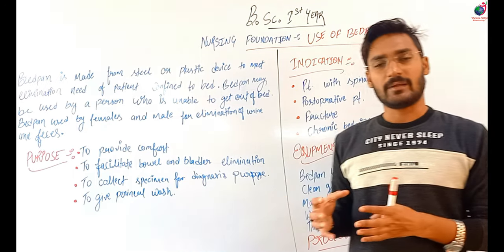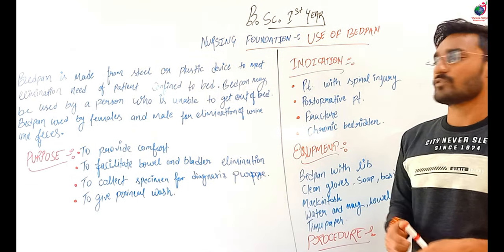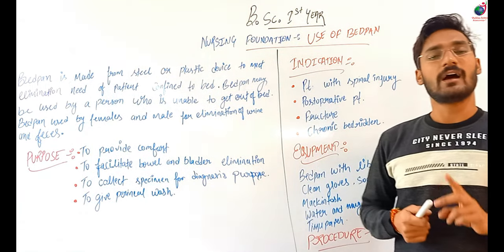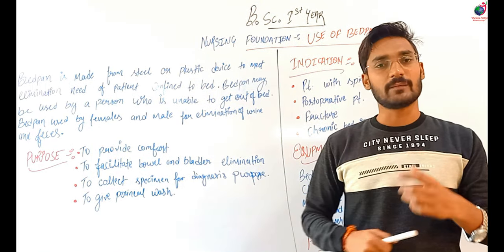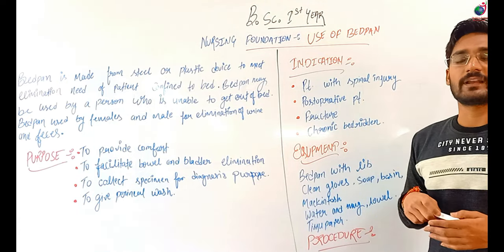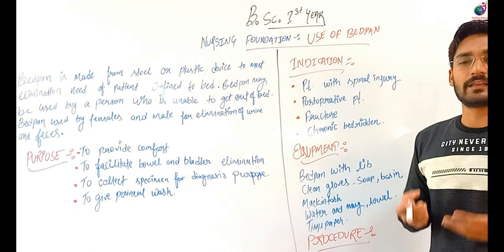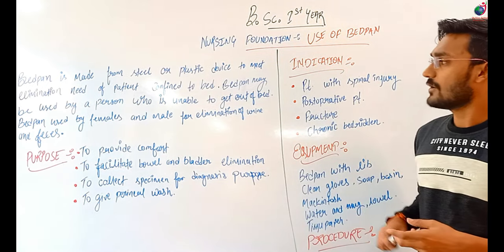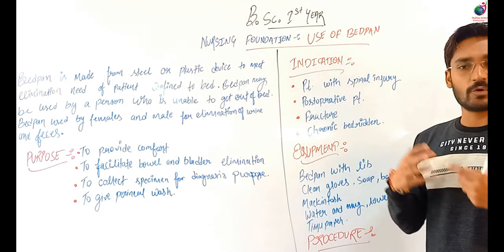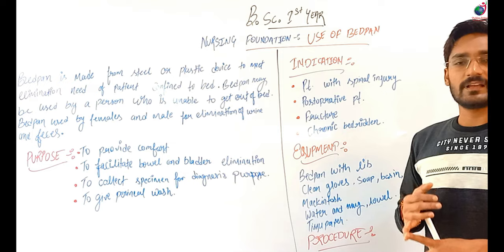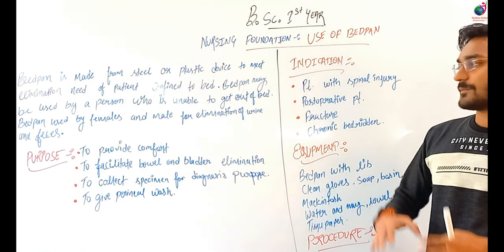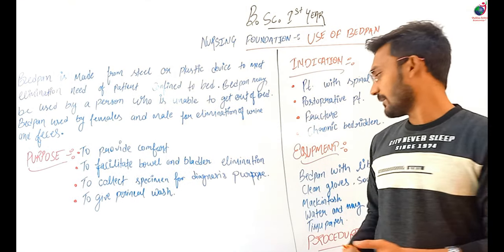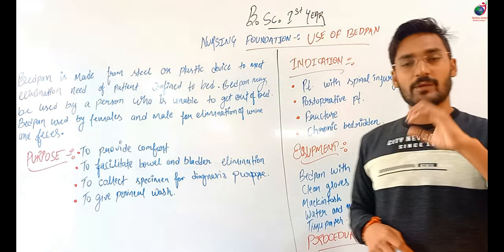Now we have seen the bedpan — how to use it, what a bedpan is, that it is steel or plastic, used to eliminate urine or faeces for patients not capable of moving from bed to the washroom. Both male and female can use it for faeces or urine. We have studied the purpose, indications, equipment, and procedure.